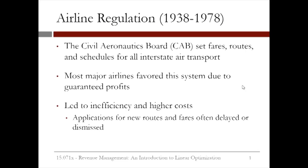Air transportation became a reality in the United States in the 20th century. From 1938 to 1978, the Civil Aeronautics Board set fares, routes and schedules for all interstate air transport. Most airlines were very positive on this system as it guaranteed their profits. However, this system led to higher costs for the travelling public as well as to various inefficiencies. For example, applications for new routes and fares were often delayed or dismissed.